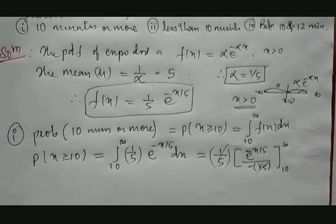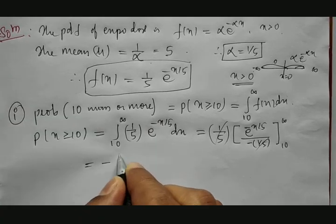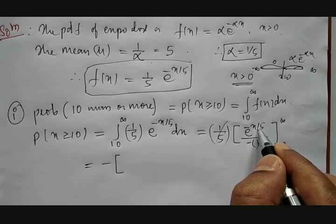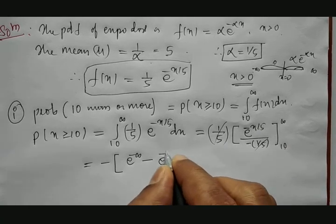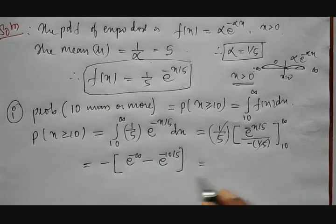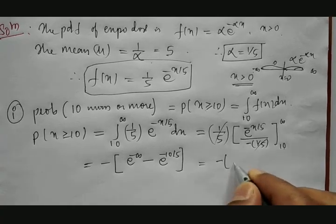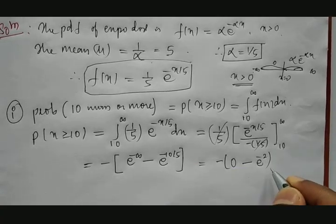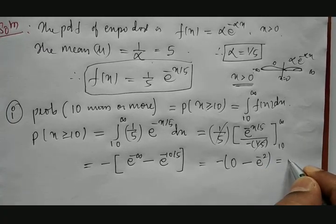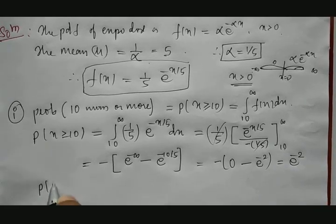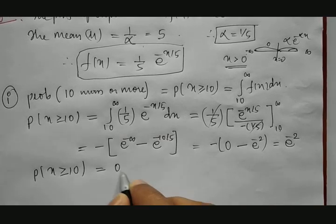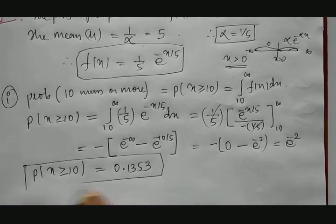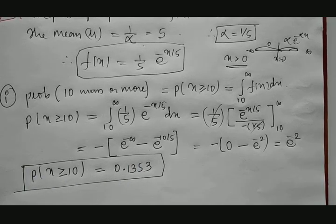Substituting the limits: the upper limit gives e^(−∞) = 0, and the lower limit gives e^(−10/5) = e^(−2). Therefore, P(X ≥ 10) = e^(−2) ≈ 0.1353. This means there is a 13.53% chance that the rain continues beyond 10 minutes.